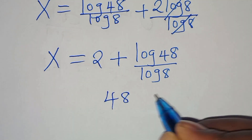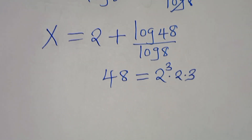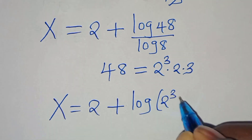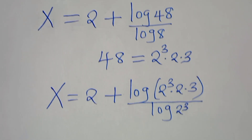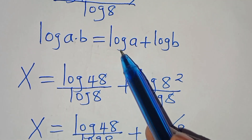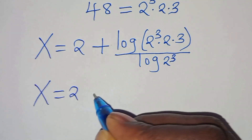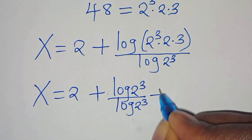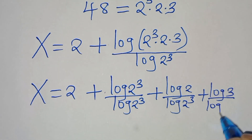We can express 48 as 2 to the power of 3 times 2 times 3. Substituting, we have x equals 2 plus log(2^3 times 2 times 3) all divided by log(8), where 8 is 2 to the power of 3. Now log(2^3 times 2 times 3) is in the form log(a times b), giving us log(2^3) plus log(2) plus log(3), each divided by log(2^3).